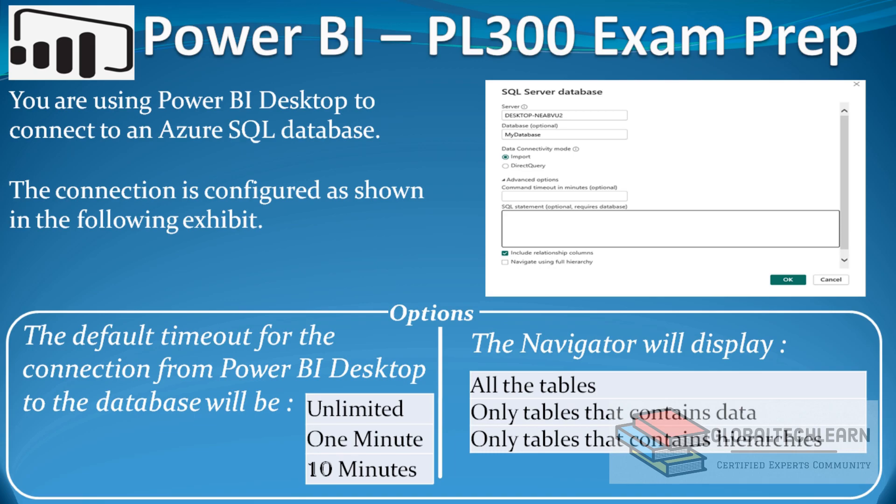The first question is: the default timeout for the connection from Power BI desktop to the database will be — with options: unlimited, 1 minute, or 10 minutes. The second question is: the navigator will display all the tables from SQL server, only tables that contain data, or only tables that contain hierarchies.